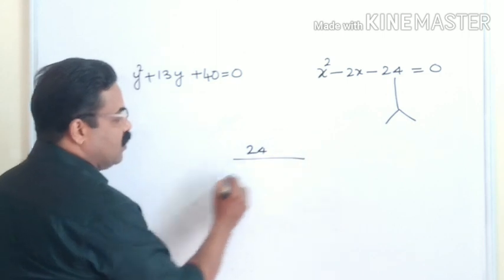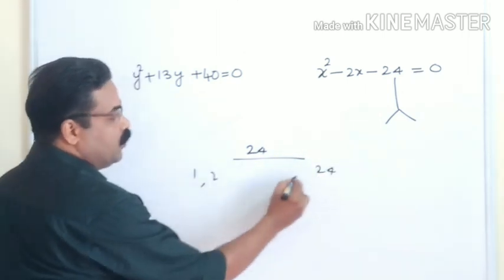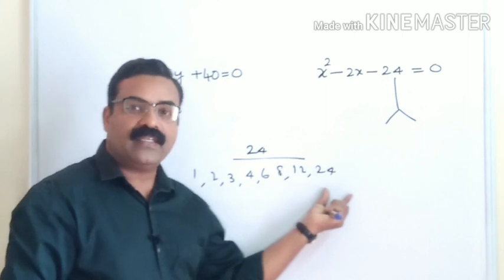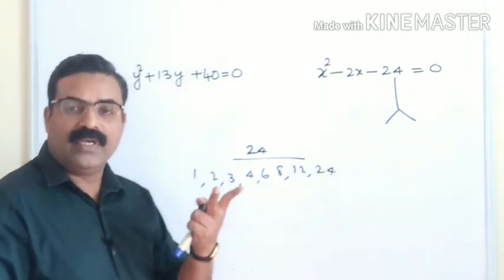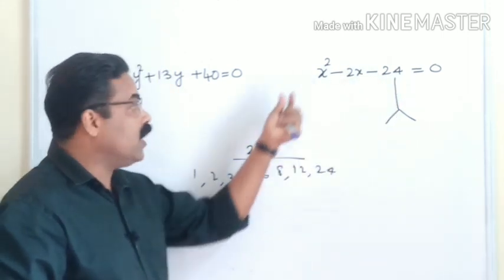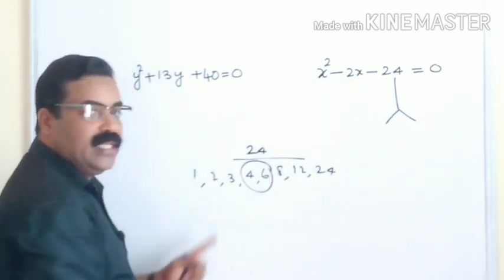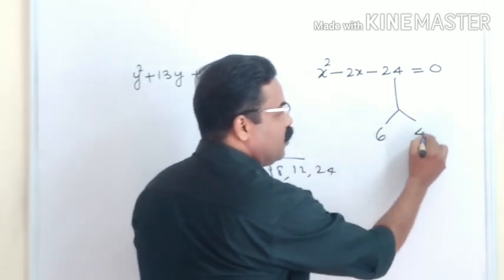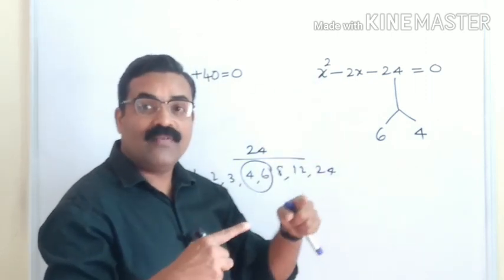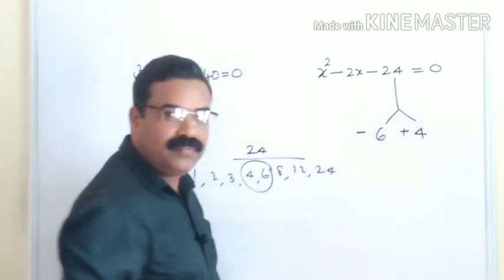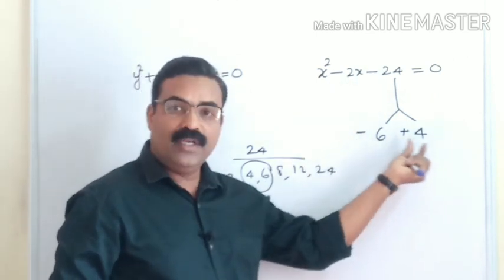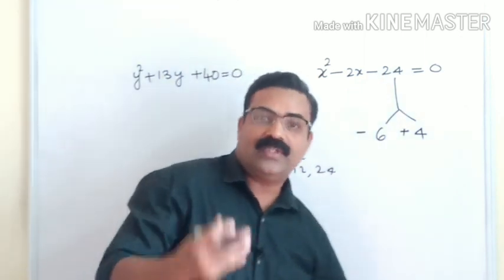The factors of 24 are: 1 × 24, 2 × 12, 3 × 8, and 4 × 6. We need two numbers whose product is −24 and sum is −2. Taking 6 and 4: if we make them −6 and +4, then −6 + 4 = −2 and −6 × 4 = −24. Both conditions are satisfied. The splitting is done.